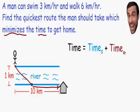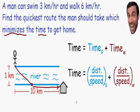We know that time equals distance divided by speed. The time the man spent swimming equals the distance he swam divided by his swimming speed, and similarly the time spent walking equals the distance walked divided by his walking speed. So the total time equals the swimming distance divided by swimming speed, plus the walking distance divided by walking speed. Now we're ready to move on to step number two.